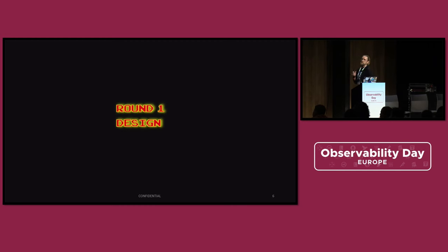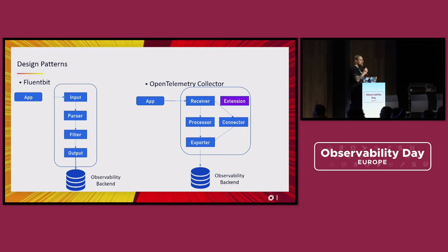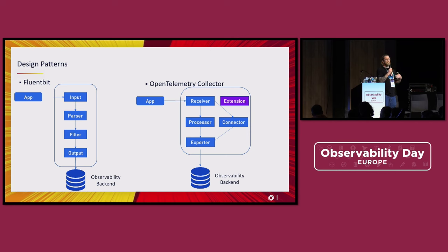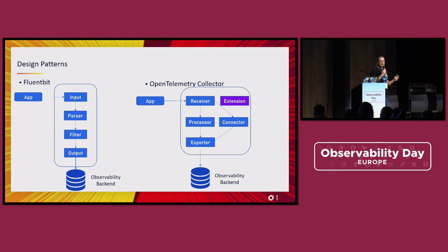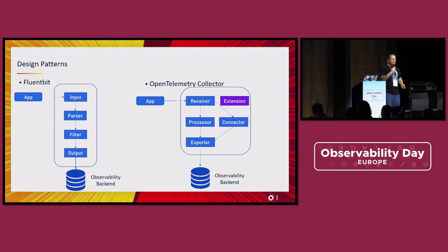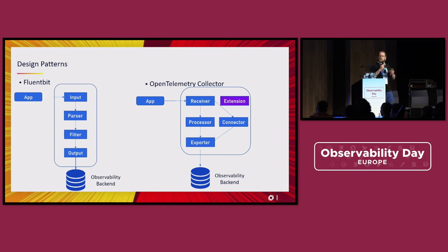Round one: design. Both agents use a configuration file that defines the pipeline. For each pipeline you define what you receive — called 'input' in FluentBit and 'receivers' in the Collector. Then you process — modifying, enriching, or dropping data — called 'processors' in the Collector and 'parsers and filters' in FluentBit. Then you send it to an observability backend using an 'exporter' in the Collector and 'output' in FluentBit.